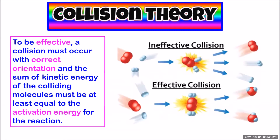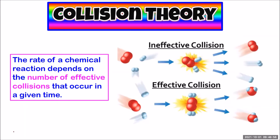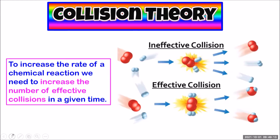Let's briefly summarize what we learned in our video on the collision theory of reactions. We learned that to be effective, a collision between molecules has to occur with correct orientation so that new bonds can form, and also the sum of kinetic energy of the colliding molecules has to be at least equal to the activation energy for the reaction. The more effective collisions that occur in a given time period — like per second — the faster that reaction is. So all we need to do is get more of those effective collisions happening per second, and our reaction will speed up.